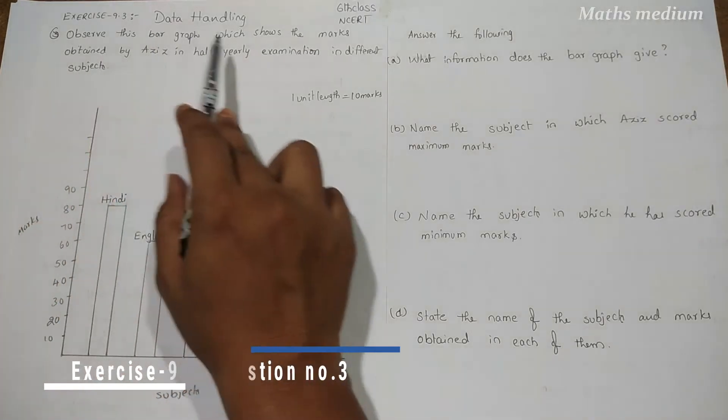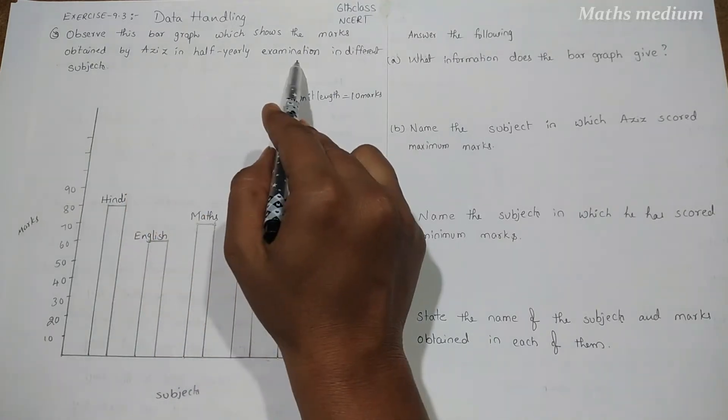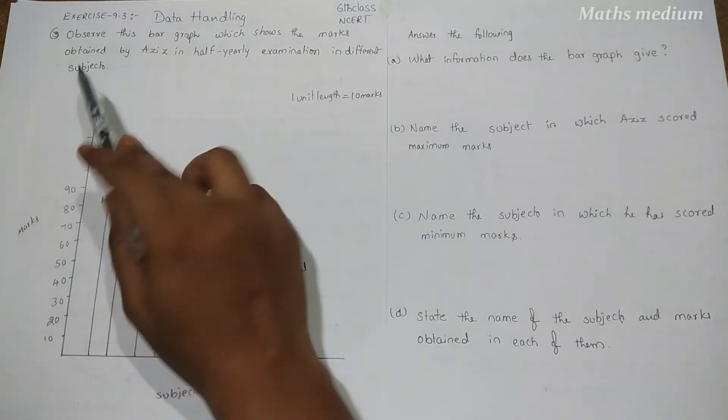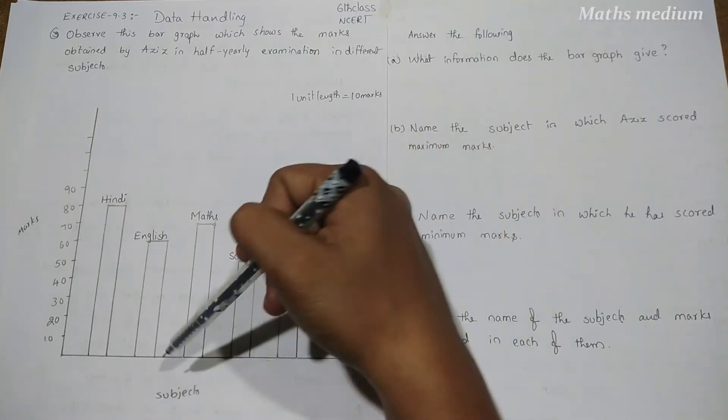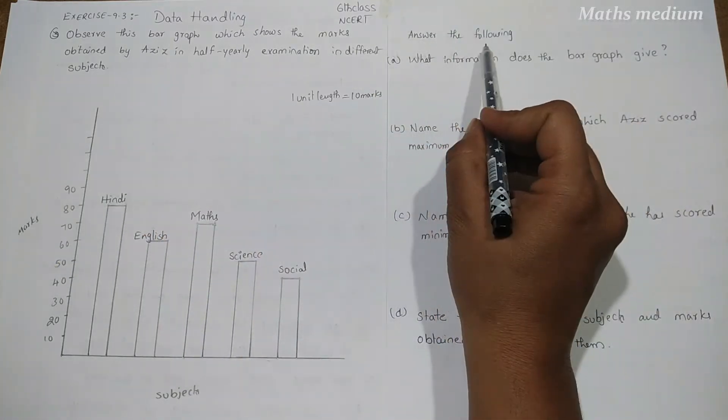Observe this bar graph which shows the marks obtained by Aziz in half yearly examination in different subjects. This bar graph contains subjects and marks of Aziz. Answer the following.